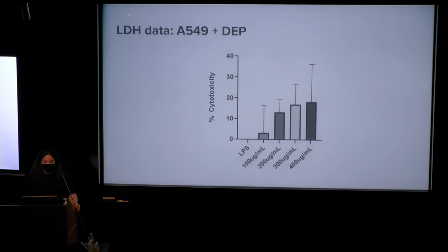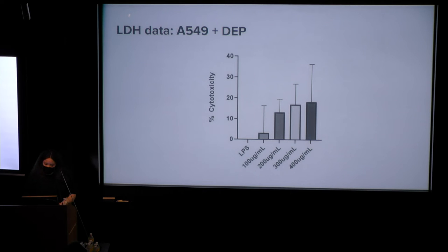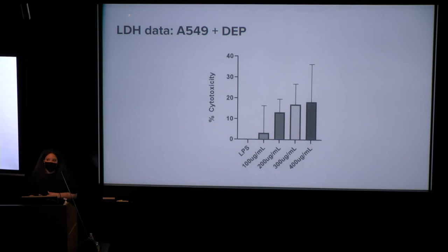Here's our data. This is our first dose response experiment — a compilation of at least three to four different experiments, which is why the error bars are a bit large. We may need to repeat some experiments. Basically, as you increase the diesel concentration from 100 to 400 micrograms per milliliter, the trend shows cell death going up. The large error bars suggest we might try to replicate experiments within the same day, since running them on different days could introduce pipetting errors.